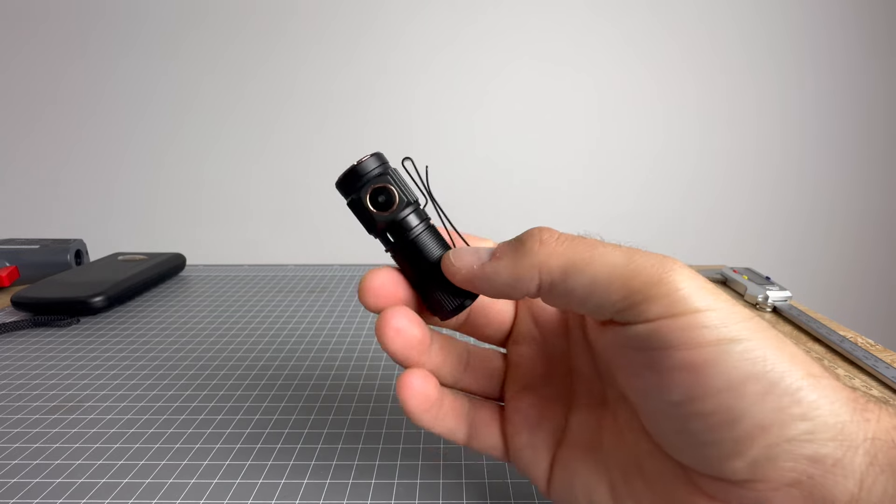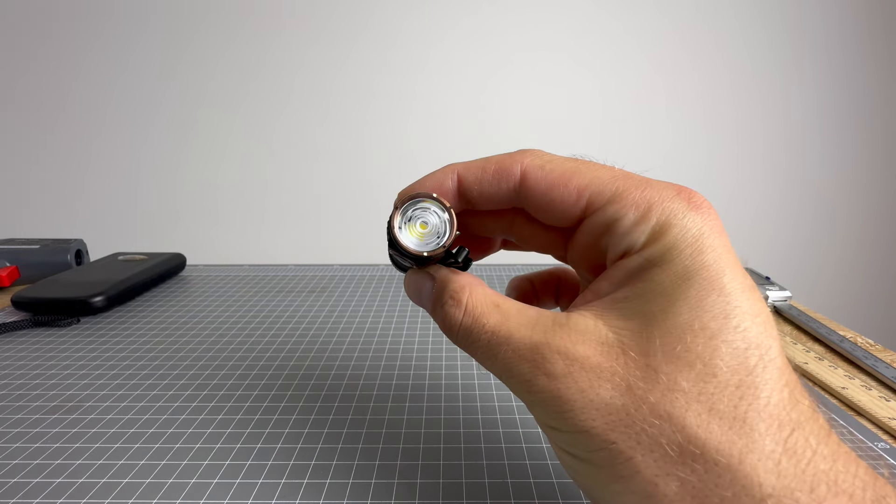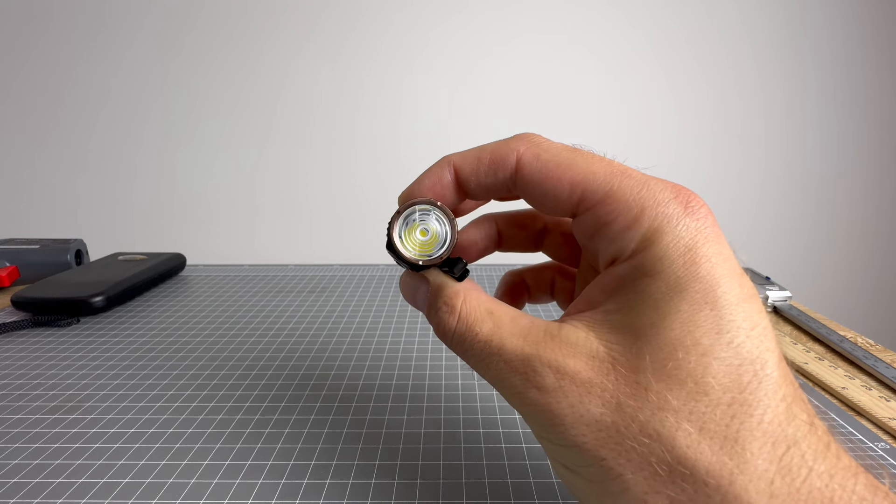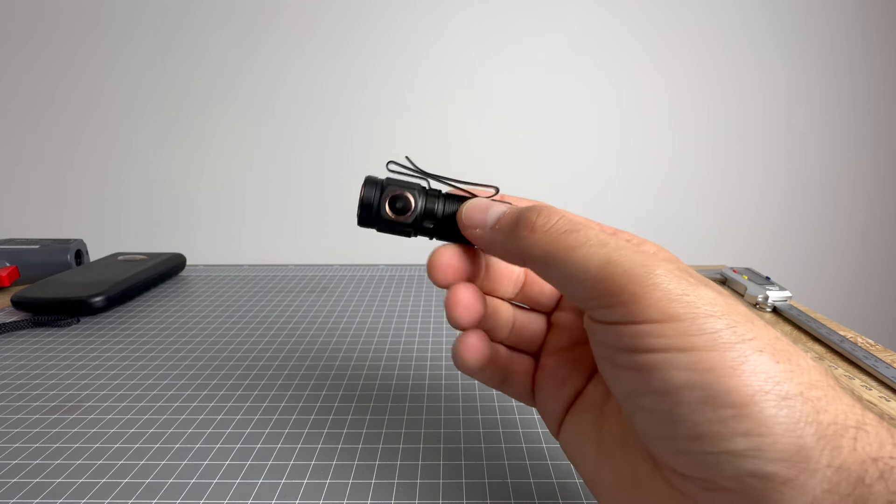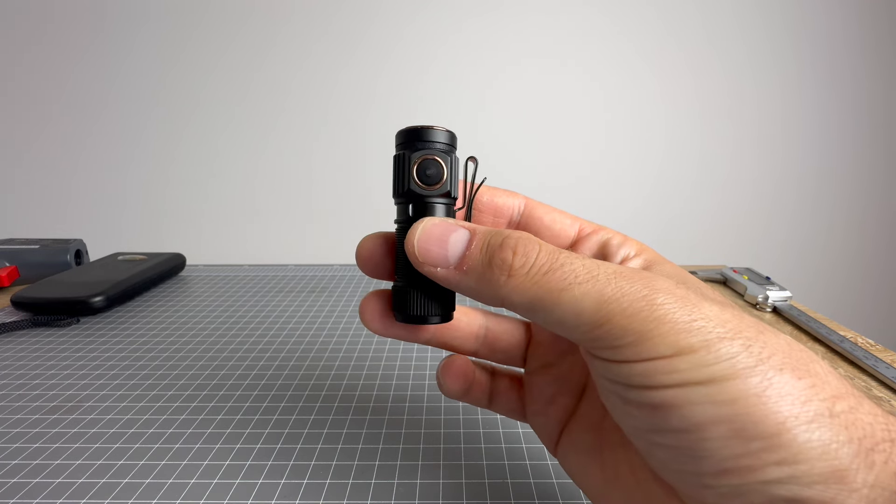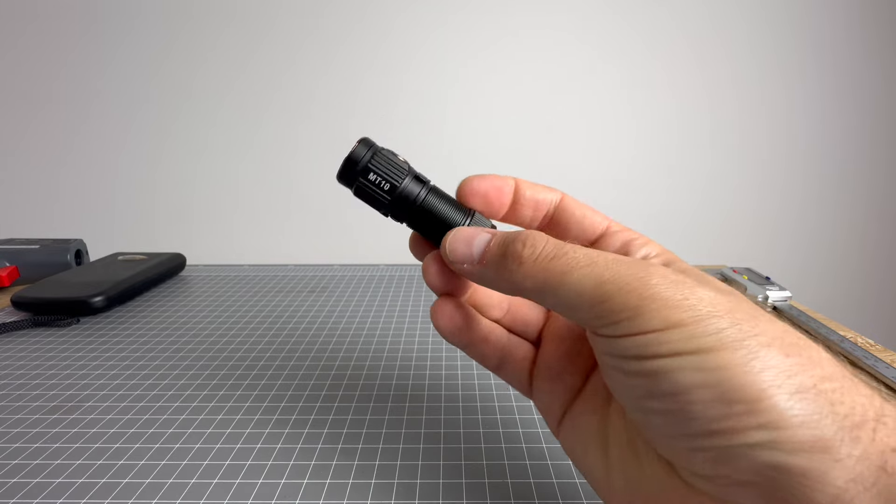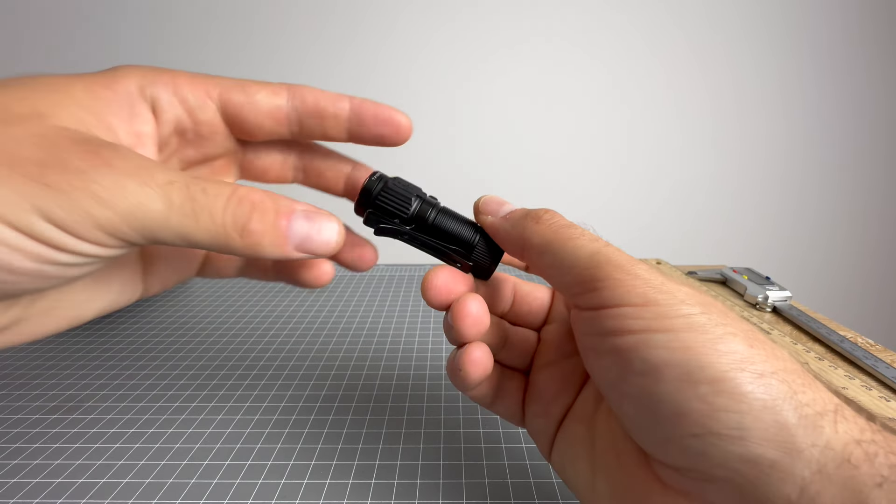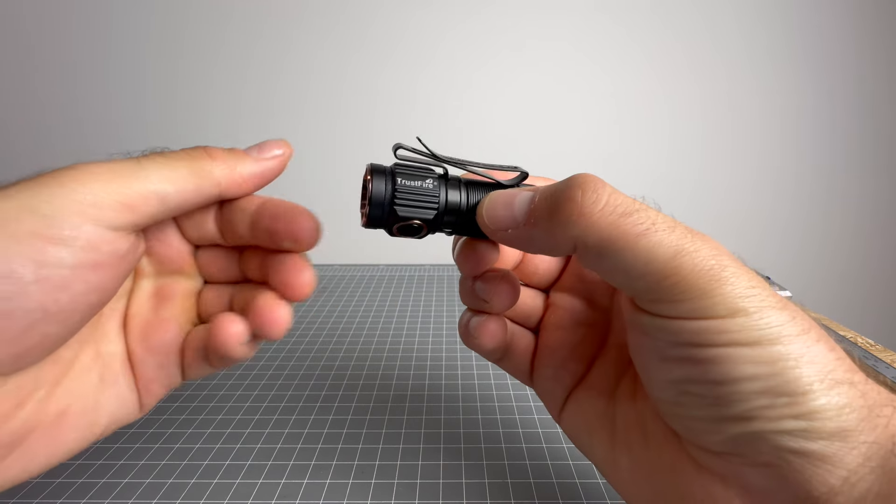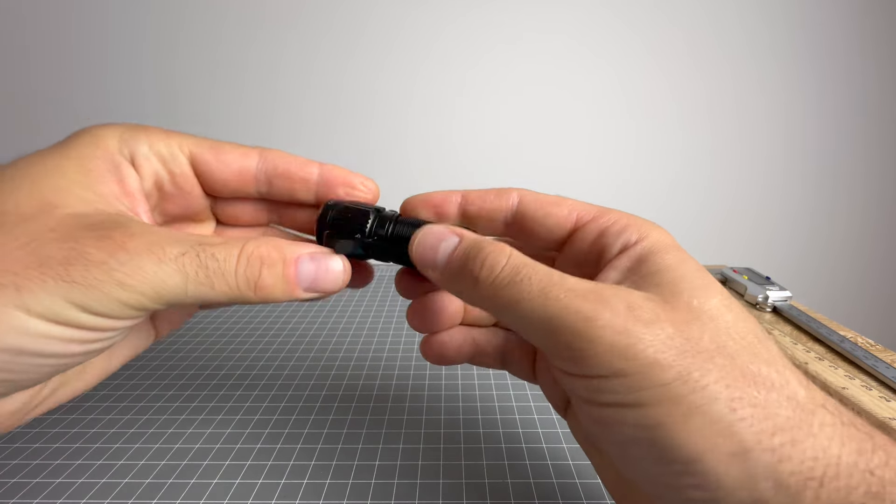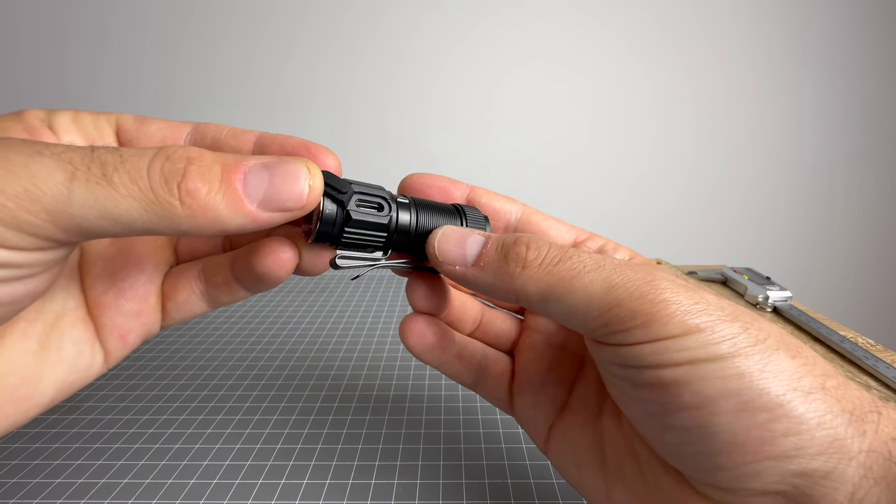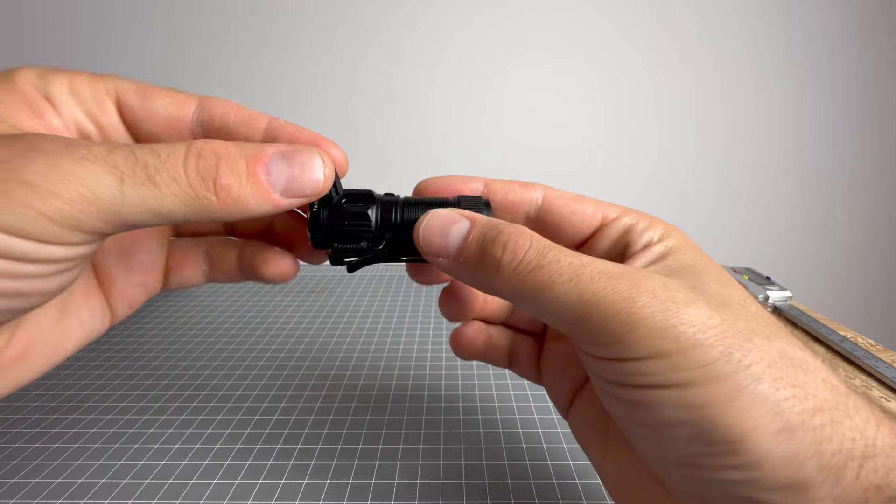Taking a look at this guy up close. We have a total internal reflection lens down there. We have a two-way pocket clip. We have a side switch here. Single click shows you the battery level indicator. MT-10 on one side. Trustfire on the other side, if you just get the pocket clip out of the way. And on the back, you've got your USB-C charging port. Quite deep. Happy with that.